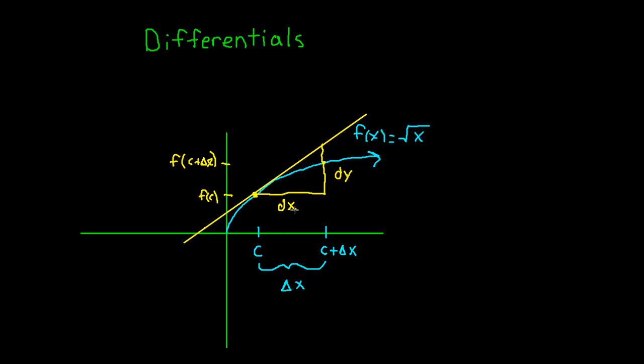And then this distance right here, that rise right there, we could call dy. Okay, now if you look very carefully at this picture, dx happens to equal delta x. So we can write that dx equals delta x. Okay, but if you look at dy, okay, if you look at dy, and if you look at what we might call delta y.